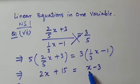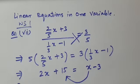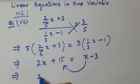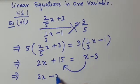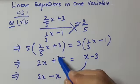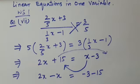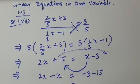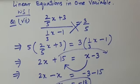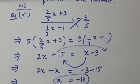Now transpose x to the left side — you get 2x minus x. Take plus 15 to the right hand side, giving minus 3 minus 15. This simplifies to: x equals minus 3 minus 15, that is minus 18. So x equals minus 18 is the solution of the given equation.